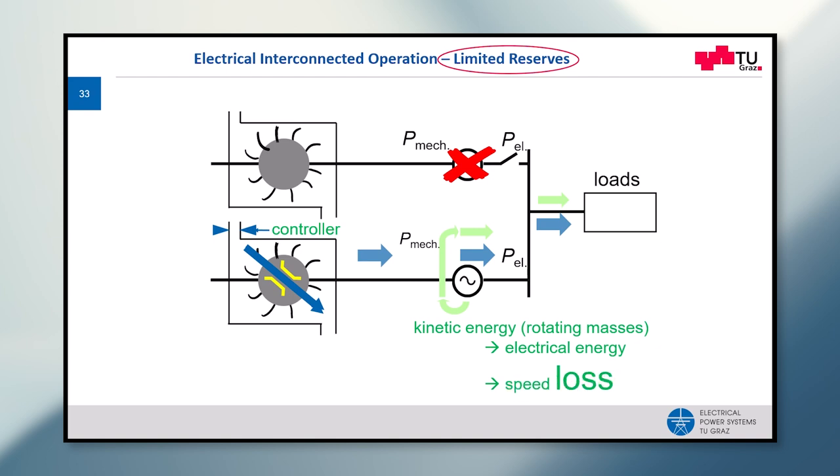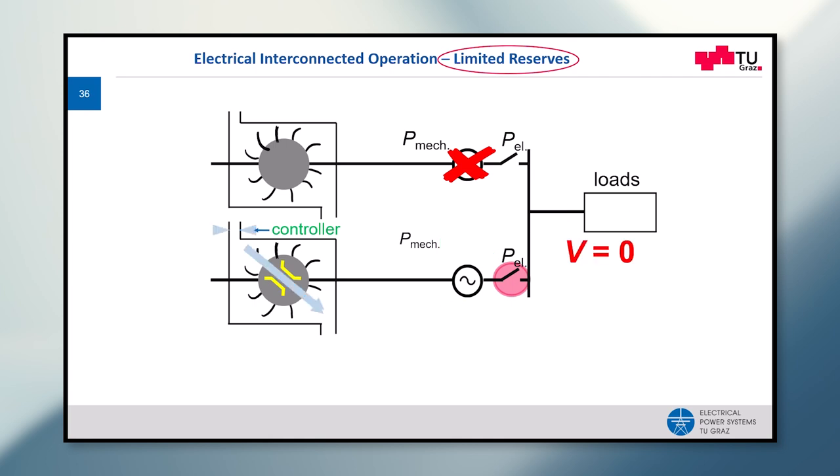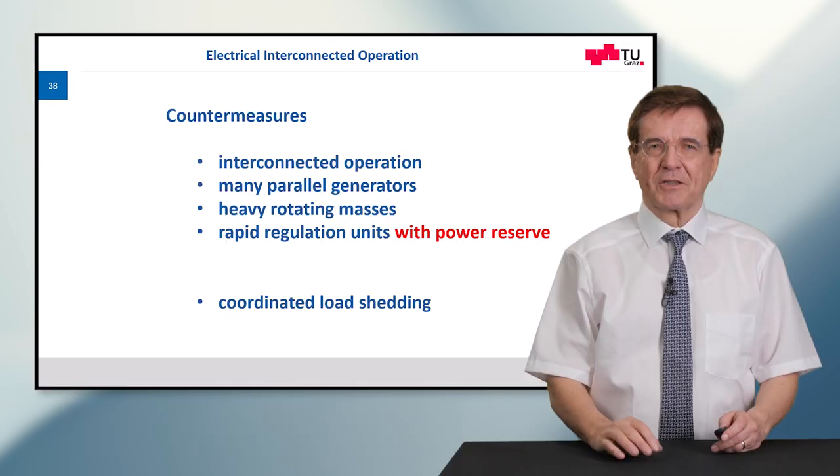This means the power plants go into self-protection and they trip out and separate themselves from the grid. Now once an under frequency trip has happened, you see the last remaining circuit breaker has opened. There is no voltage provided to the loads, and this is a blackout.